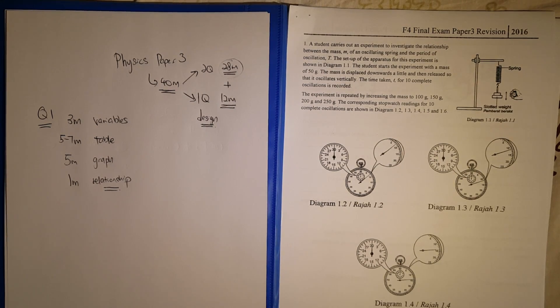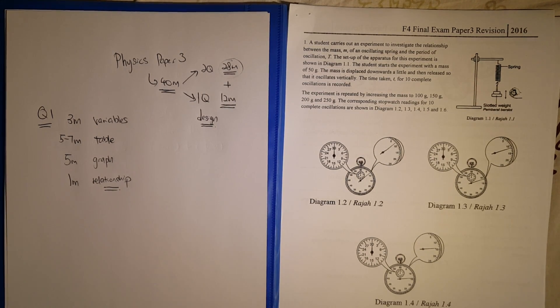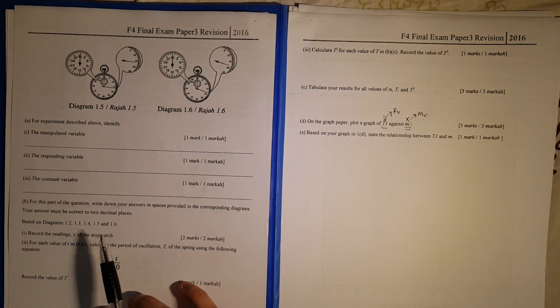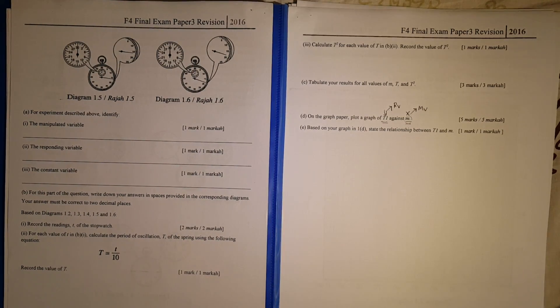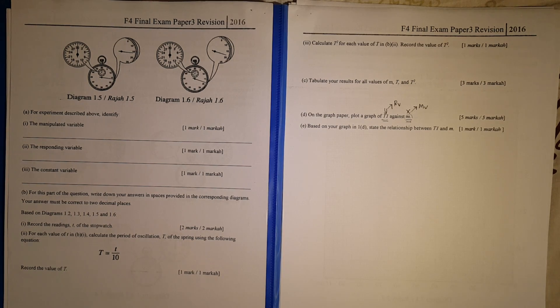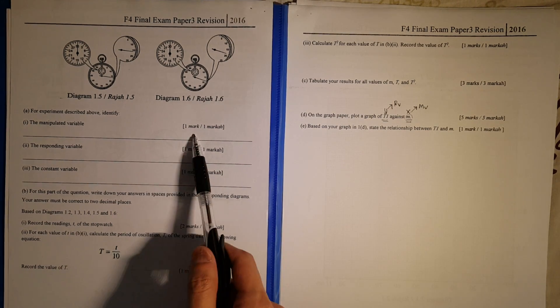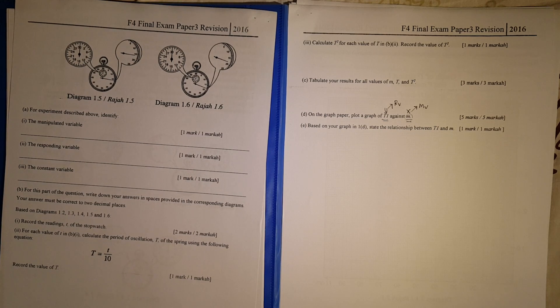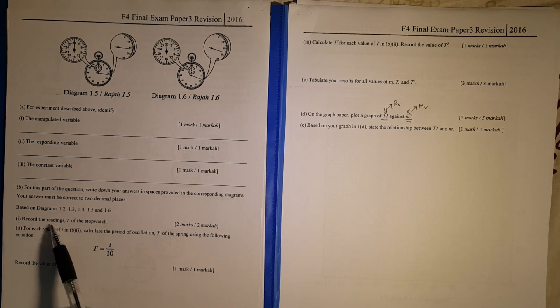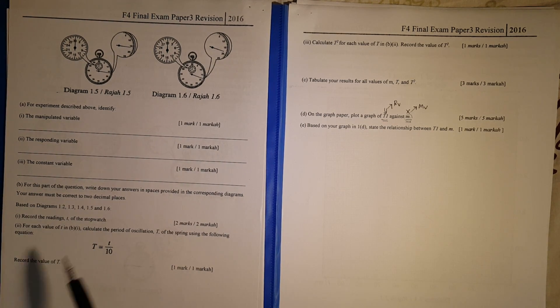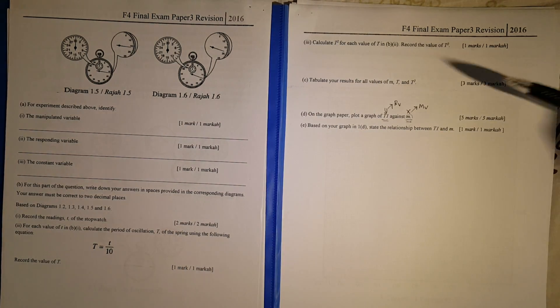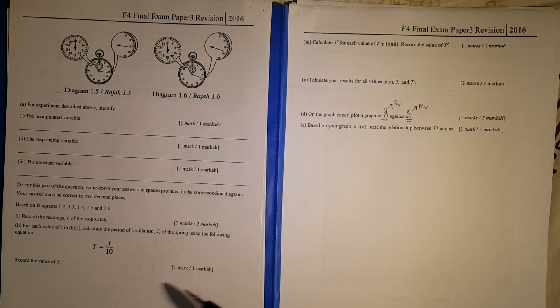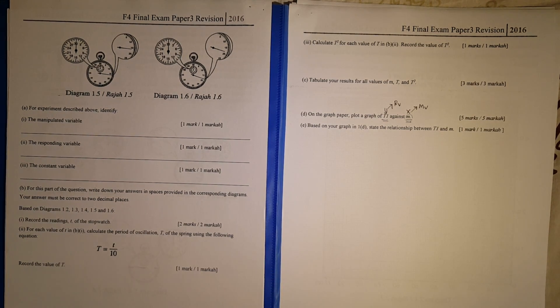I go into the second part which is the table. For the table part, why I say five to seven marks: sometimes it comes in bits and pieces. After the three marks on variable, what they always ask you to do is record the readings, two marks, record the value, one mark, calculate, one mark, and then after that tabulate. So if I calculate this, three plus one, four, five, six, seven, that's a total of seven marks.